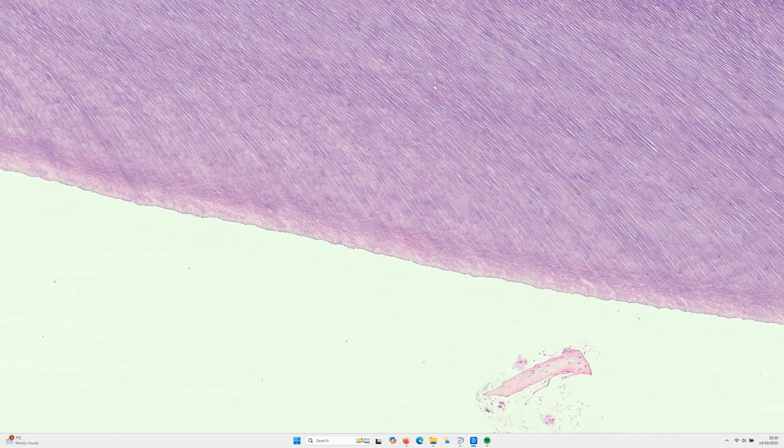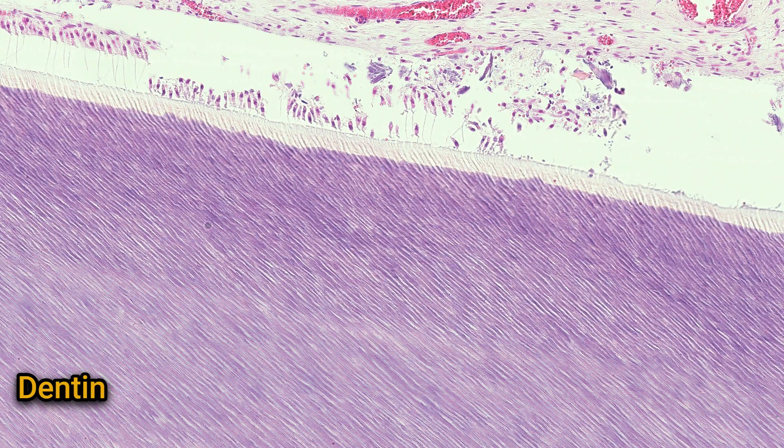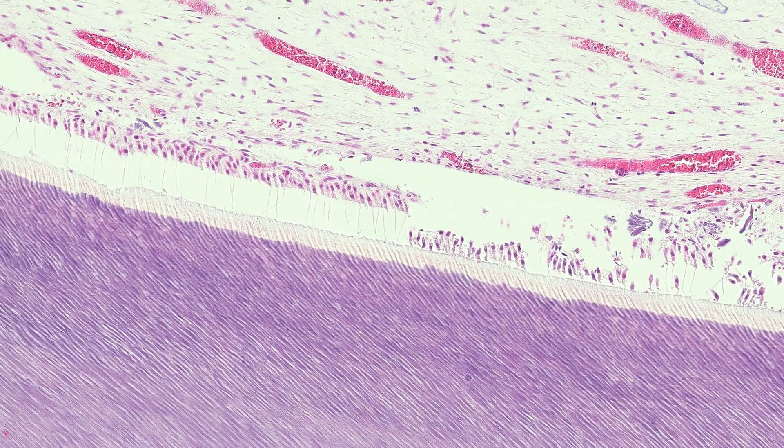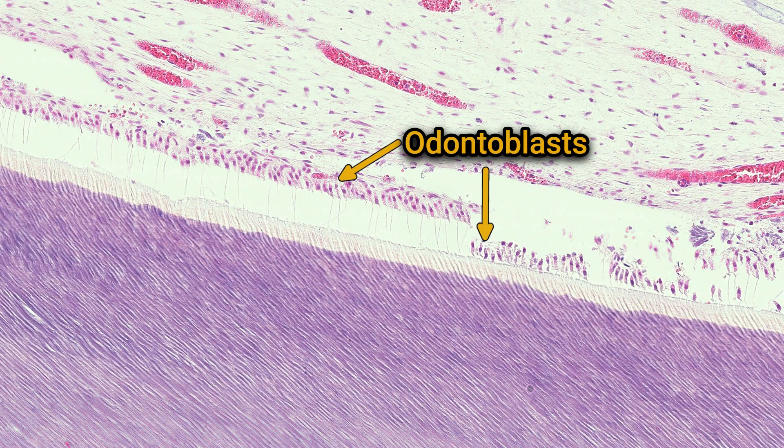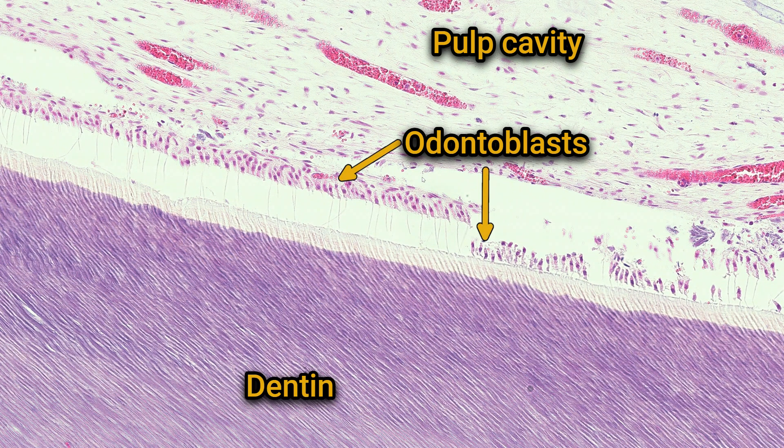Beneath the enamel is the dentin, which forms the bulk of the tooth in both the crown and the root. It's a calcified tissue that's harder than bone, but softer than enamel. Radiating through the dentin are thousands of microscopic channels called dentin tubules, each containing a little cytoplasmic extension from an odontoblast, called an odontoblastic process. Odontoblasts are the cells that make up and maintain the dentin. You can find them as a layer of columnar cells demarcating the pulp cavity and the dentin.